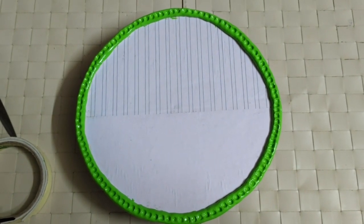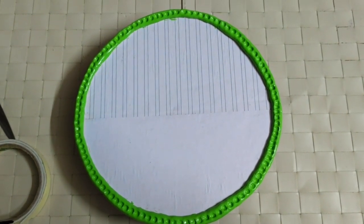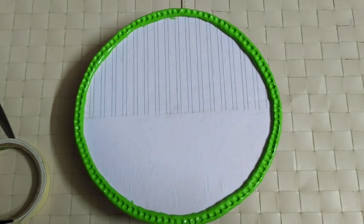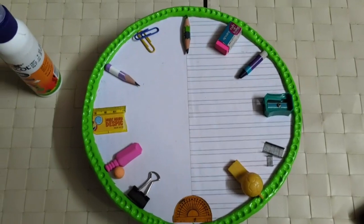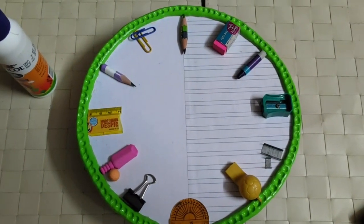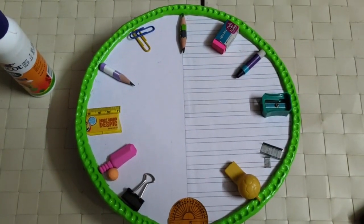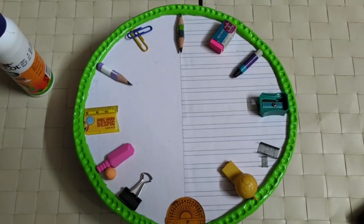I have painted the border with green color. Let it dry. In the meantime, I am going to stick the school related items as the numbering.